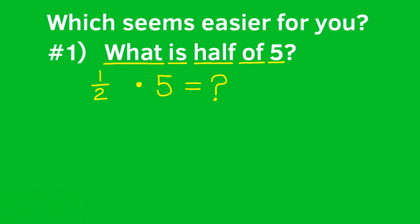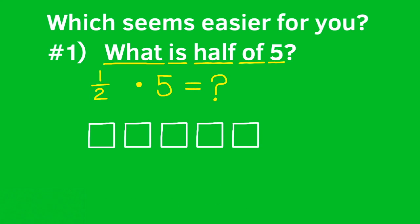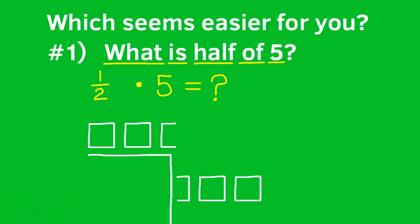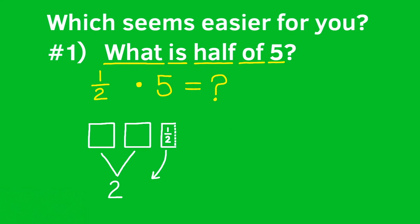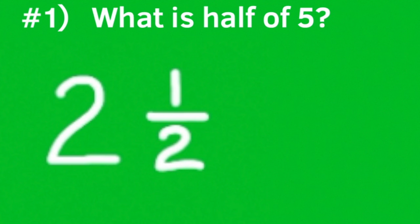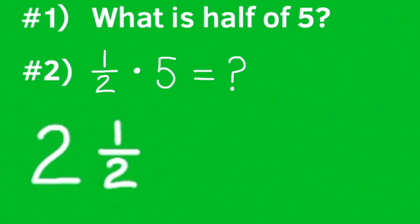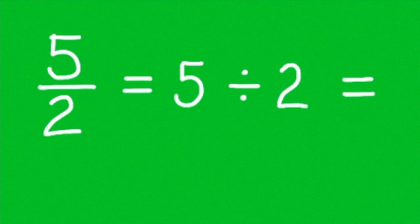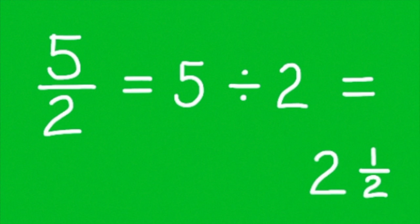Let me illustrate this for you. Let's start out with five squares — that equals five. Cut that in half, or divide it by two, and you're left with two and a half. Half of five is two and a half. Half times five is two and a half. And five divided by two is two and a half.